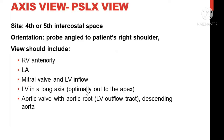Starting with the parasternal long axis view: the probe should be placed on the fourth or fifth intercostal space and angled towards the patient's right shoulder. The structures you will see in the parasternal long axis include the right ventricle outflow tract, left ventricle, left atrium, mitral valve, LV long axis, and the aortic valve.